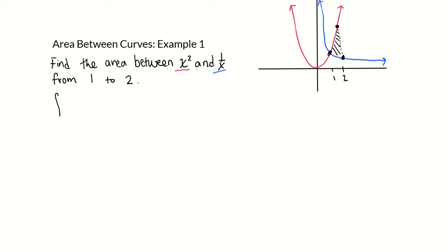So that'll be the integral from 1 to 2 of x squared minus 1 over x dx. I'm going to rewrite this as the integral from 1 to 2 of x squared minus x to the negative 1 dx.